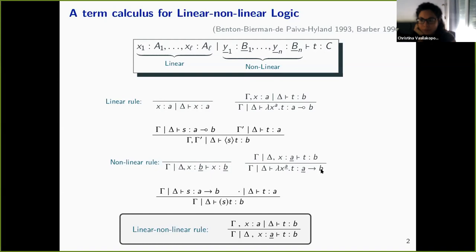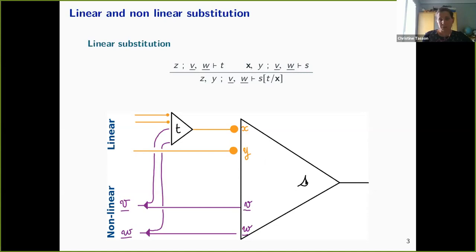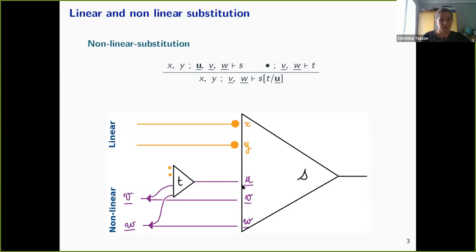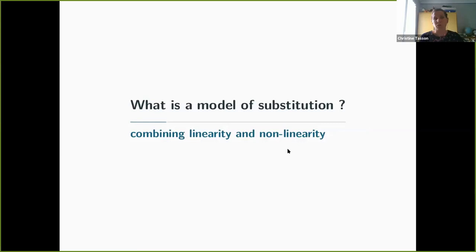What is interesting for us is the linear substitution and the nonlinear one. If I have a term S and I want to substitute X, which is a linear variable, with a term T, what happens is that I just put together the linear variables, and here is the contraction of the nonlinear parameters. For the nonlinear substitution, if I have a nonlinear variable U and I want to substitute it by T, I have to be careful that the linear parameters do not exist so that I won't duplicate them.